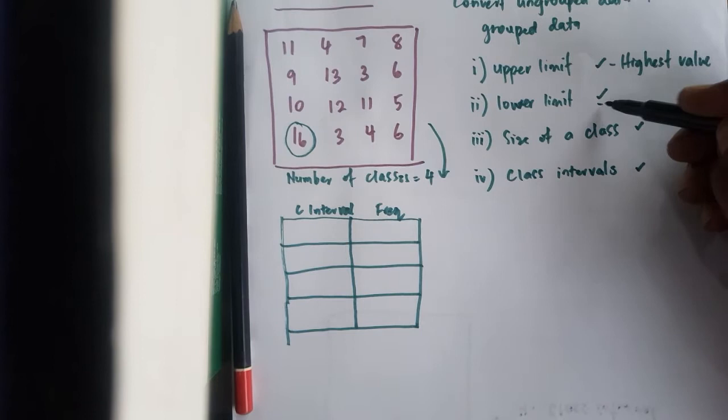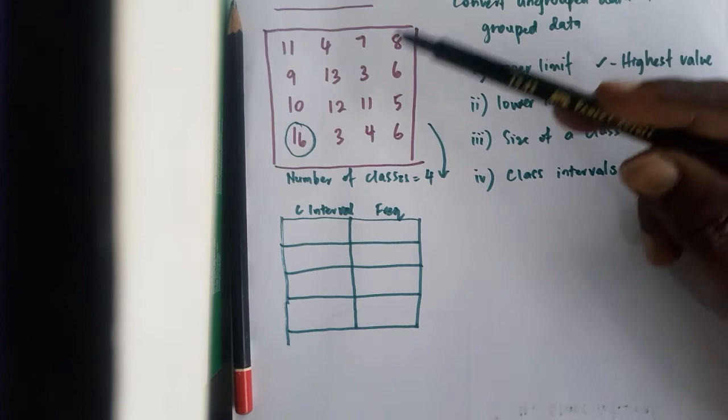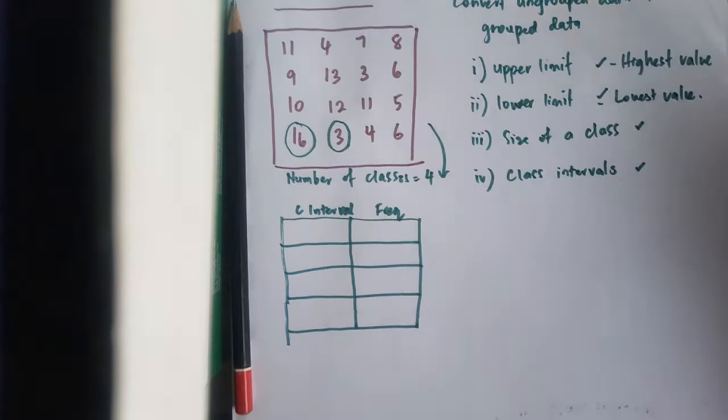Lower limit is the lowest value in the data and lowest value will be 3.